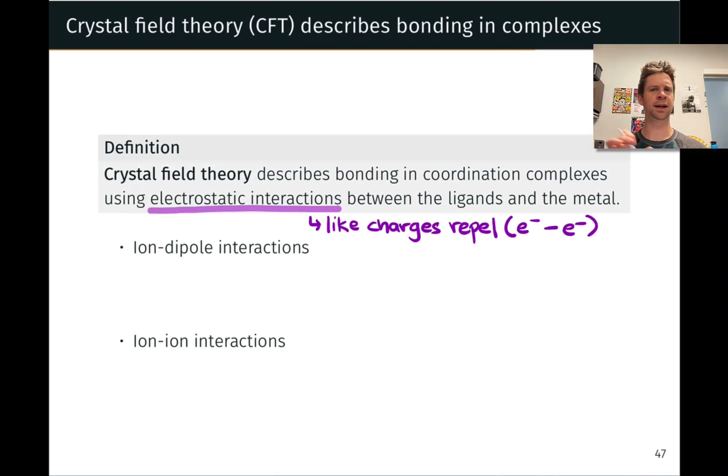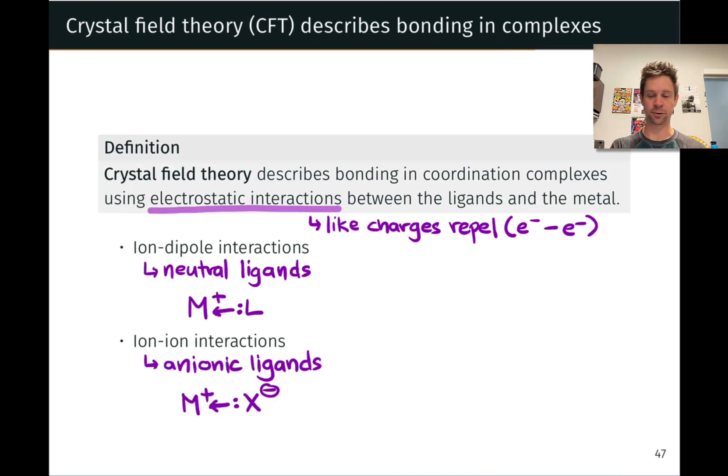We can think about this happening in two different ways depending on the nature of the ligand. We can think about the metal-ligand interaction as a kind of ion-dipole interaction where the metal is a cation and the ligand is neutral but has a dipole with the negative end pointed toward the positively charged metal, or as ion-ion interactions, essentially ionic bonds, when the ligand is anionic. Crystal field theory works for both cases because it is essentially based on this idea that electrons repel each other. We're thinking about the ligand as a source of negative charge via the lone pair that's being donated to the metal center.